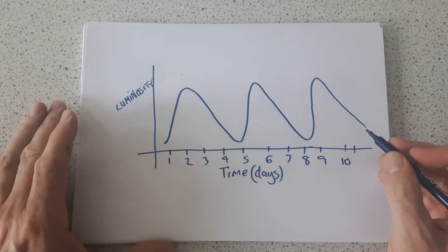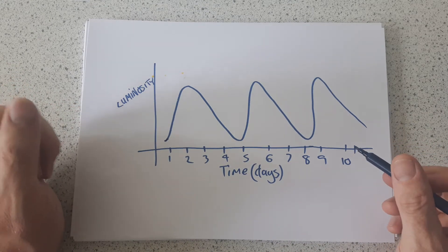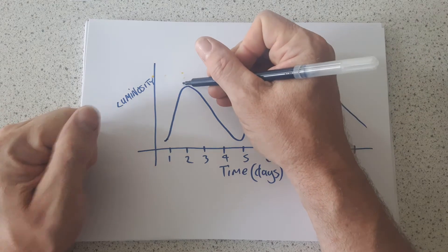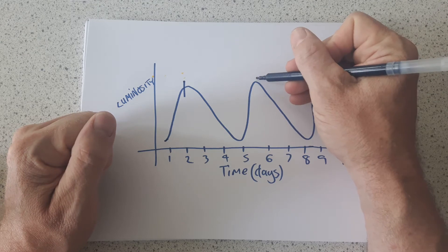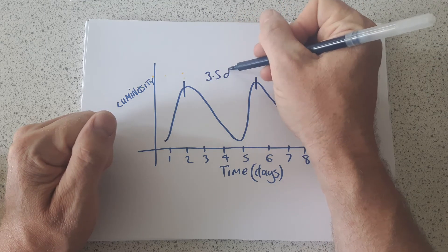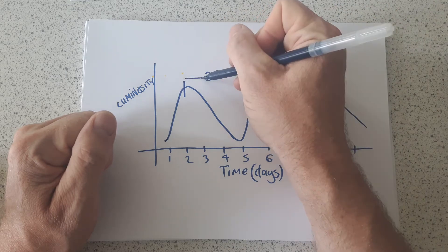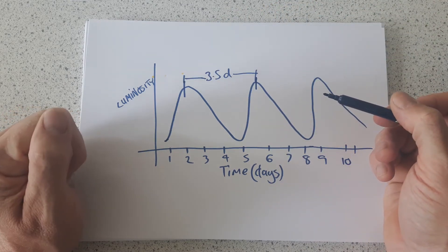So she was measuring the period of brightening and dimming. Now the period of brightening and dimming is just like with any wave. It's the time taken to go through one complete cycle. So if that's on day two and back to there on day roughly five and a half, then that's approximately 3.5 days period. And you may be asked to calculate the period of oscillation of a variable star in your exam.